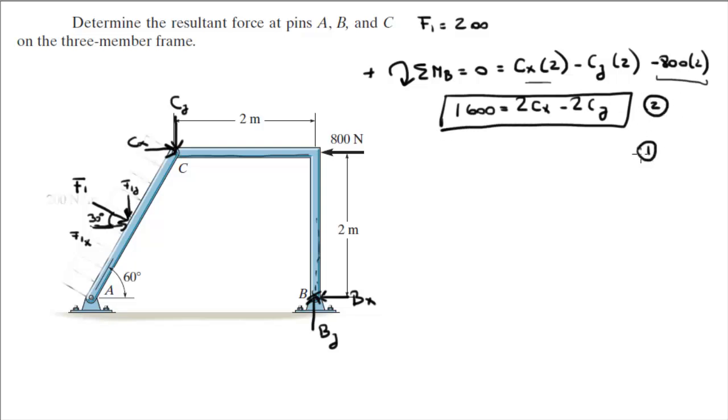Now, I'm going to rewrite equation 1 but I'm going to multiply by negative 1 and I'm going to rewrite it right here. And equation 1 multiplied by negative 1 is equal to minus 533.6 is equal to minus 2CX minus 1.155CY. So, once you add them together these two cancel out and you get 1066.4 is equal to minus 3.155CY.